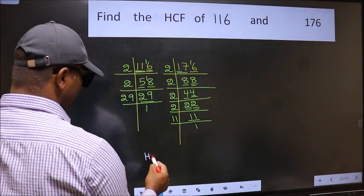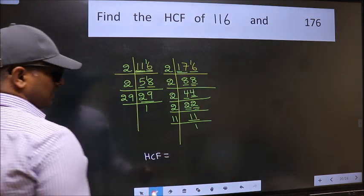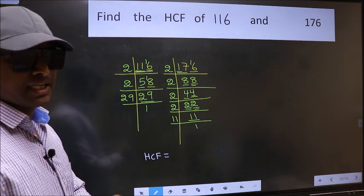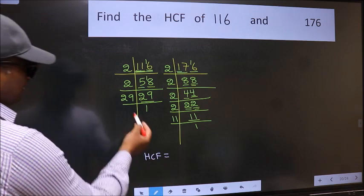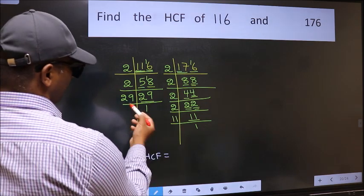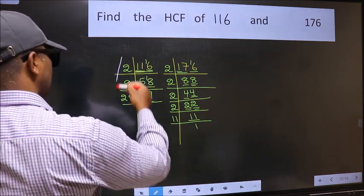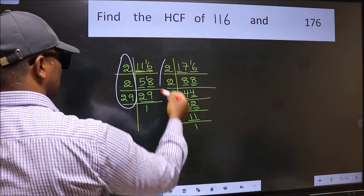Therefore, our HCF is the product of the numbers which should be present in these 2 places, that is here and also here.